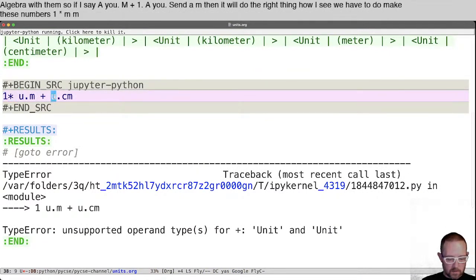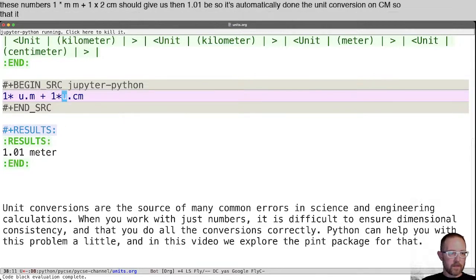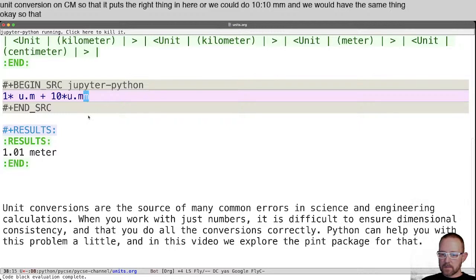One times a meter plus one times a centimeter should give us then 1.01 meters. So it's automatically done the unit conversion on centimeter so that it puts the right thing in here. Or we could do 10, 10 millimeters, and we would have the same thing. Okay, so that's how we can do regular algebra.